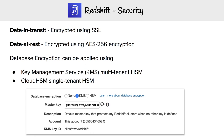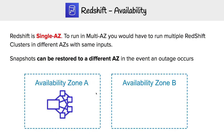For Redshift security: data in transit is encrypted using SSL; data at rest can be encrypted using AES-256; database encryption can be applied using KMS or CloudHSM. For availability, Redshift is single-AZ — this is important to remember, as many services are multi-AZ but Redshift is not. To run in multi-AZ, you would have to manually run multiple Redshift clusters in different AZs with the same input. Snapshots can be restored to a different AZ in the event of an outage.